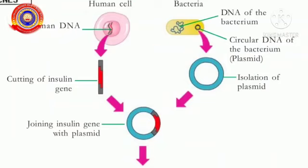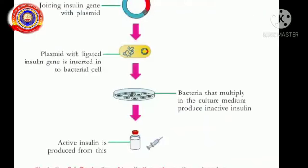From the bacteria, the circular DNA of bacteria, or plasmid, is isolated. The insulin gene is cut using a genetic scissor, also called restriction endonuclease, and a small portion of the plasmid is also cut using the genetic scissor. Then, using genetic glue (ligase), the insulin gene is joined with the plasmid, and the plasmid with the ligated insulin gene is inserted into the bacterial cell.